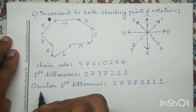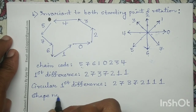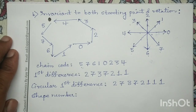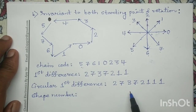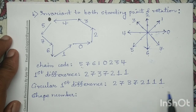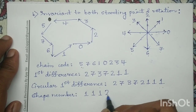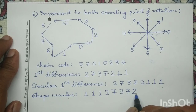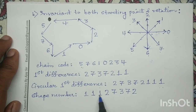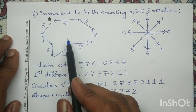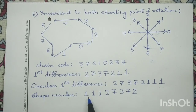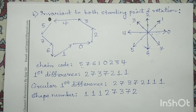Next, in order to determine the shape number, we have to compute the minimum magnitude number, or the smallest number, of this circular first difference. The minimum magnitude number of this circular first difference is 1 1 1 2 7 3 7 2, which is the shape number of this given boundary. It is the eight-directional chain code which is invariant to both the starting point and the rotation.